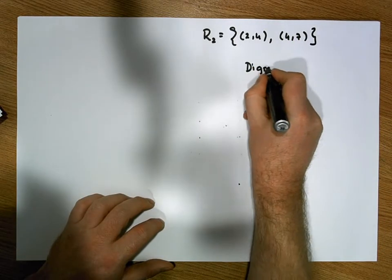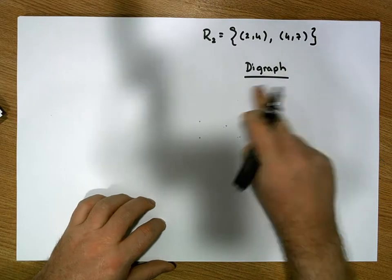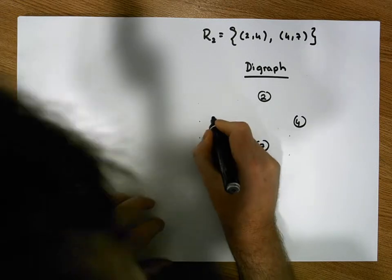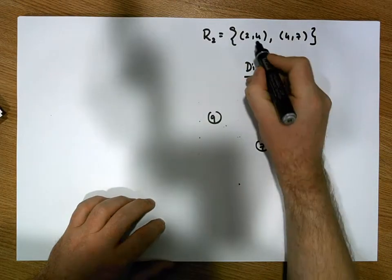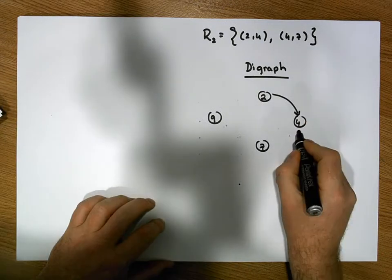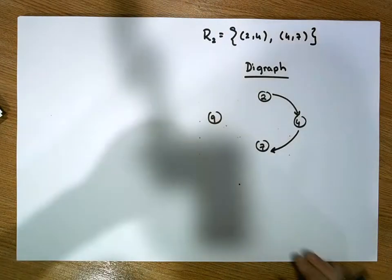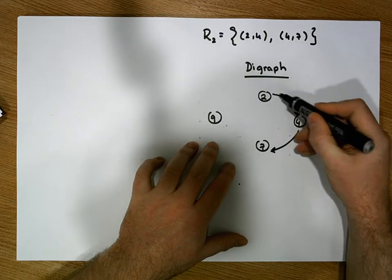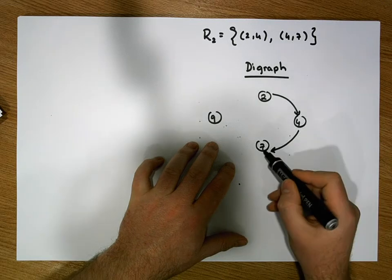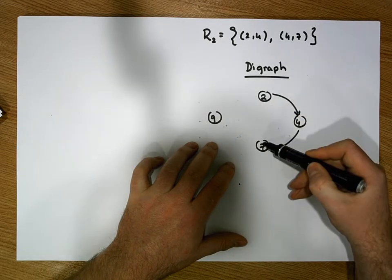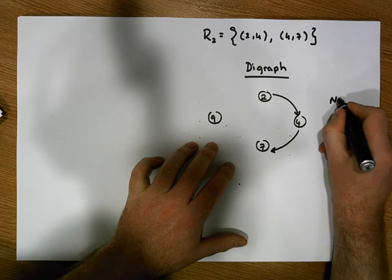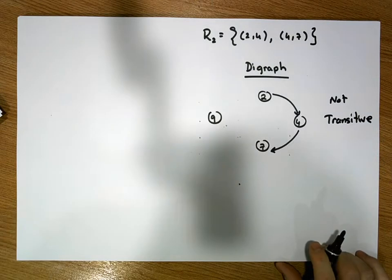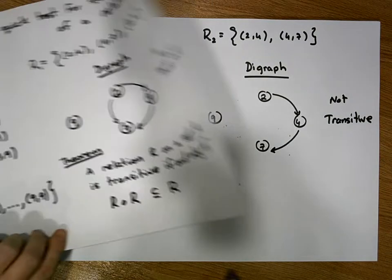Let's construct the digraph for R2. The digraph has the nodes the relation was built on: two, four, seven, and nine. We put in the directed edges: two is taken to four, and four is taken to seven. Is this relation transitive? No — I can make a double hop from two to four and four to seven, but I can't go directly from source to final destination.